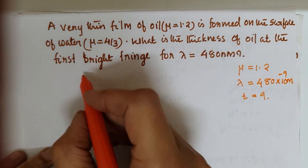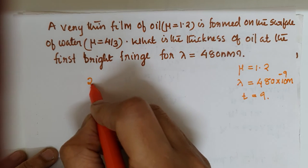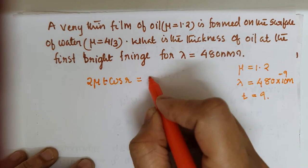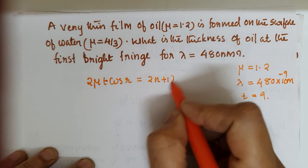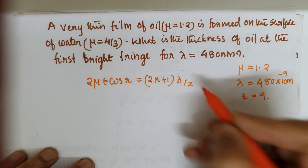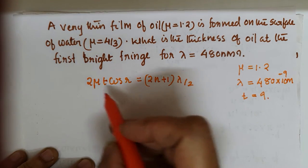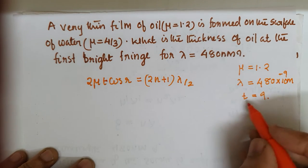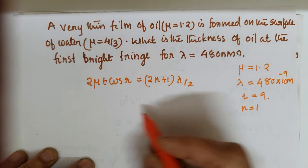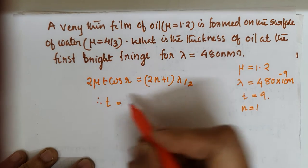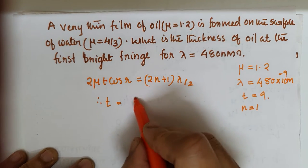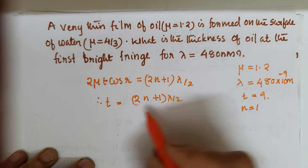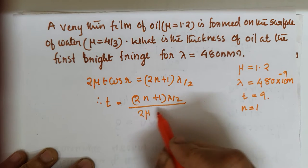We know that in the case of a thin film, the condition for bright fringes is: 2 mu t cos r equal to (2n + 1) into lambda by 2. Here t is to be found out for the first bright fringe, that is n equal to 1. Therefore t is equal to (2n + 1) into lambda by 2, divided by 2 mu cos r.